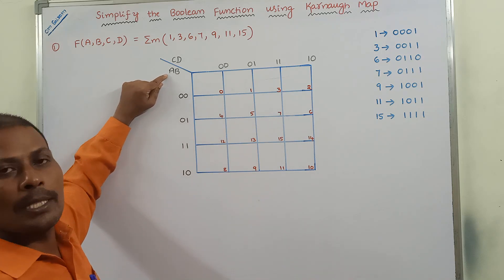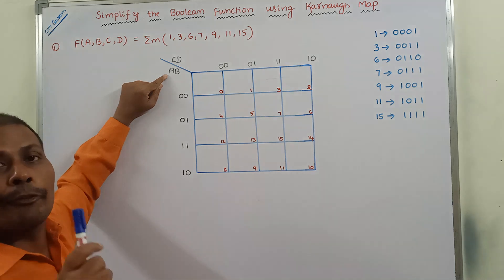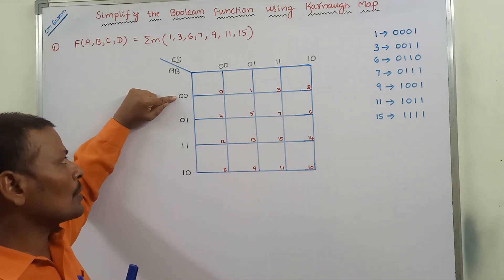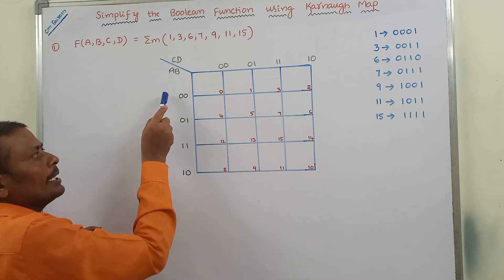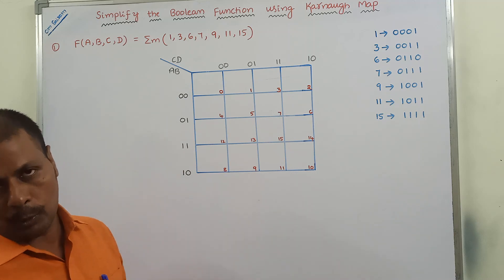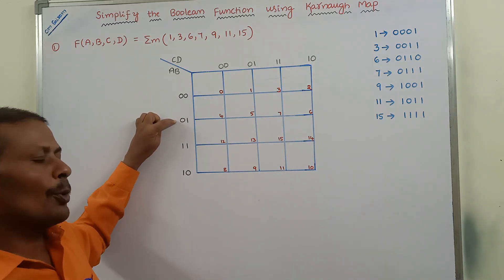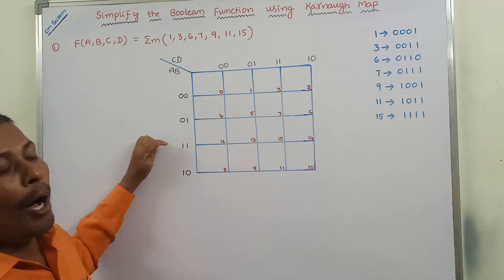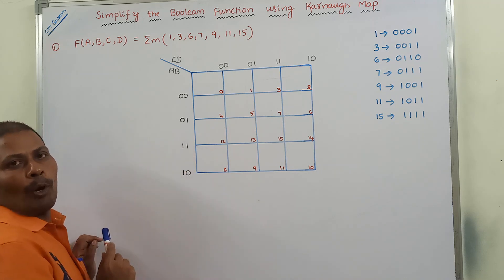With two variables, how many possible combinations do we get? We get 4 possible combinations: 00, 01, 11, 10. While writing these combinations, we have to follow the Gray code. In Gray code, first we write 00, then 01, then 11, then 10.